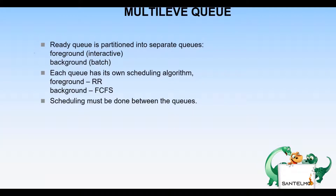For multi-level queuing, the ready queue is partitioned into separate queues — foreground (interactive) and background (batch) processes. Processes in the ready queue can be divided into different classes where each class has its own CPU scheduling needs. For example, a foreground process may use round robin while a background process may use first come first serve.